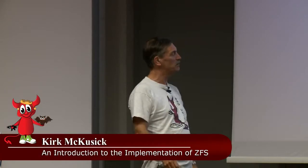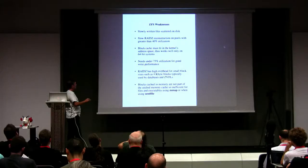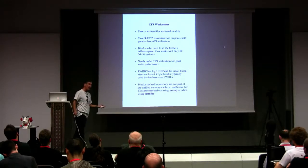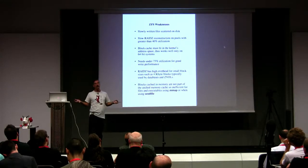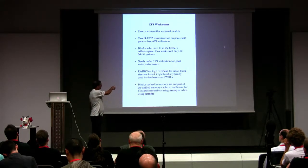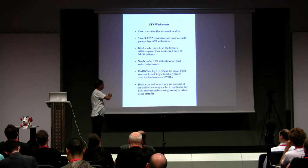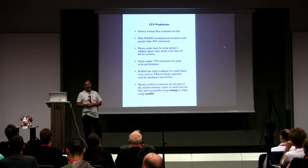FFS will go to 95% quite happily and to about 99% somewhat less happily. RAID-Z has a lot of good properties, but one less nice property is that if you're using 4K blocks, you have a 50% overhead if you're doing single redundancy RAID. 4K blocks are typically used by zvols or databases, so you will have high overhead if you choose to use 4K blocks. Finally, the thing that's really a pain is that the blocks cached in memory are not part of the unified buffer cache — ZFS has its own little world with the ARC. So if you're doing mmap or sendfile, you end up doing an extra memory-to-memory copy every time you read or write something.